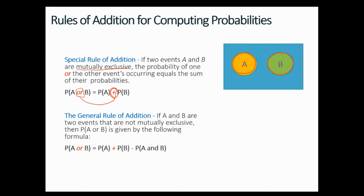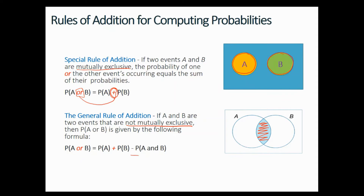How is this different from the rule above? Here the events are not mutually exclusive, meaning they have an area in which both events are happening at the same time. When two events overlap each other, that's called non-mutually exclusive. The formula changes by having the subtraction of the joint — P(A or B) = P(A) + P(B) minus any joint they may have.